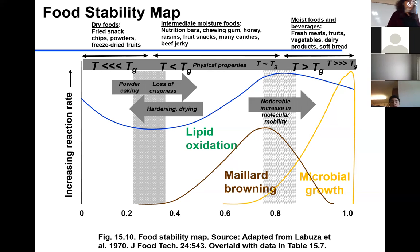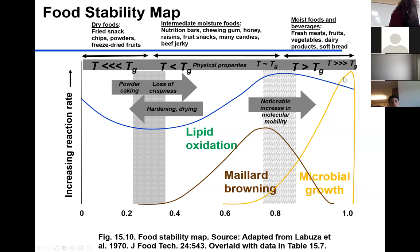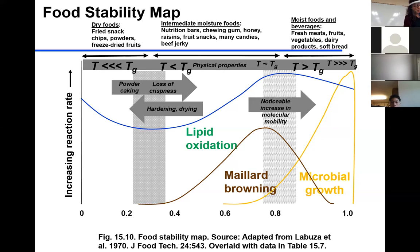If we look at microbial growth, we start seeing growth around potentially 0.7 to 0.8. After 0.85 to 0.9, there is a really strong spike of microbial growth. So high-moisture foods — with high water activity — are very perishable.